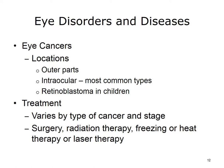Cancer of the eye is uncommon. It can affect the outer parts of the eye, such as the eyelids, which are made up of muscles, skin, and nerves. If the cancer starts inside the eyeball, it's called intraocular cancer. The most common intraocular cancers in adults are melanoma and lymphoma. The most common eye cancer in children is retinoblastoma, which starts in the cells of the retina. Cancer can also spread to the eye from other parts of the body. Treatment varies by type and how advanced it is, and may include surgery, radiation therapy, freezing or heat therapy, or laser therapy.